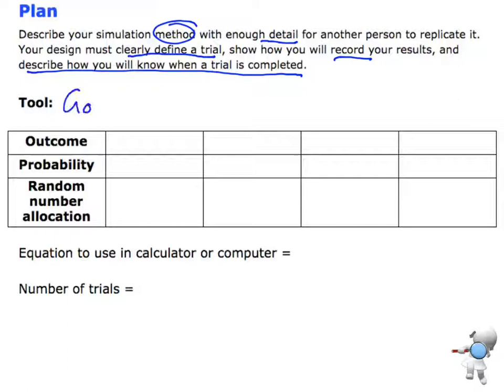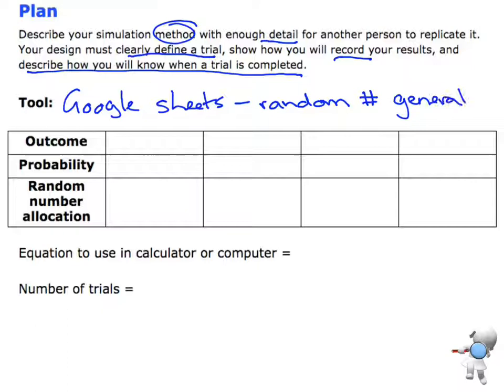I'm going to start by looking at my tool. For this example I'm going to use Google Sheets as my tool, and I'm going to use the random number generator in Google Sheets. I could also use Excel, a graphics calculator, a spinner — there are all sorts of other tools I could use, but this is the particular one I'm going to use.